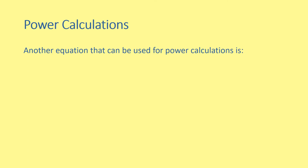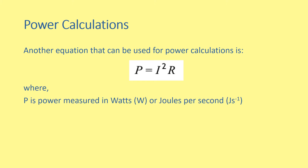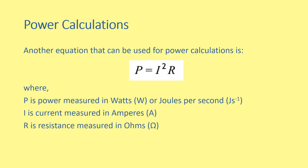Another equation that can be used for power is P equals I squared R. This equation, just like P equals IV, appears on the relationship sheet. In this equation, P is the power measured in watts or joules per second, I is the current measured in amperes, and R is the resistance measured in ohms. This equation only appears in the National 5 course, but it is on the relationship sheet.